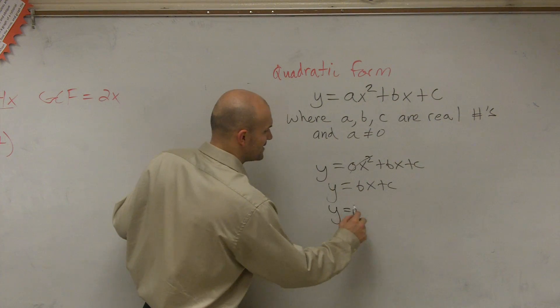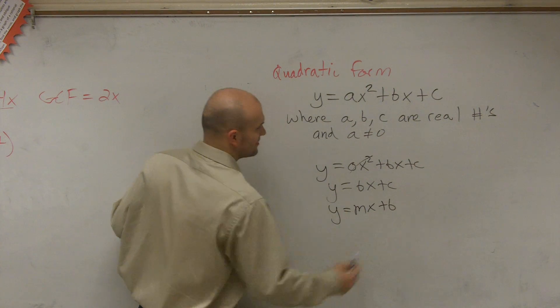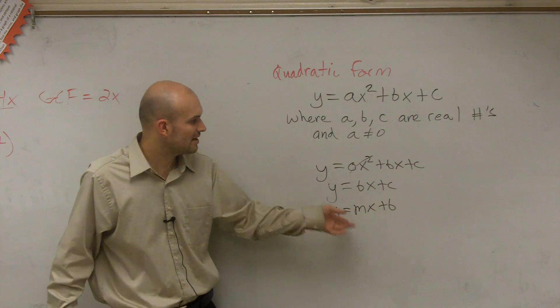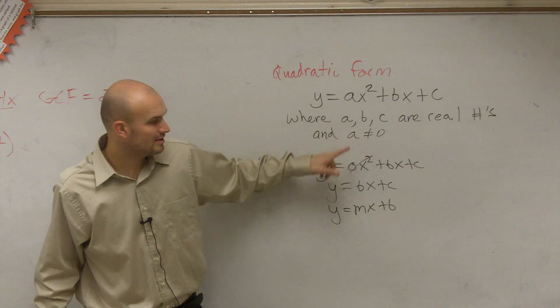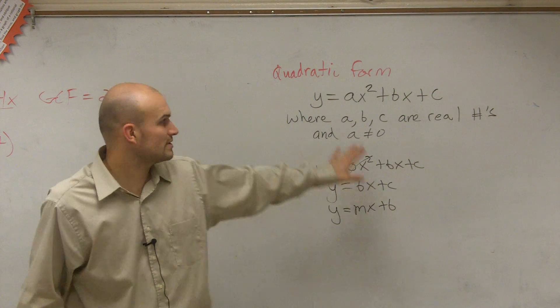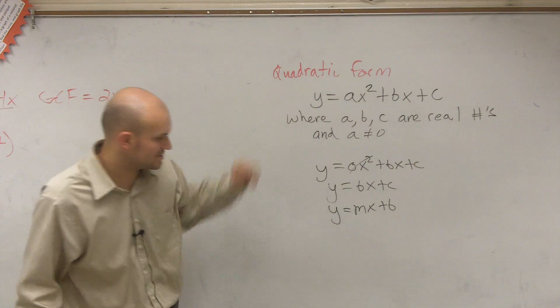Yeah, remember this one? Y equals mx plus b, right? Remember that m and b are just numbers. So we can use whatever letters we want to represent the numbers. But if you guys have 0 in front of your x squared, then you have a line, right? But we're not talking about linear equations anymore. Now we're talking about quadratic equations.